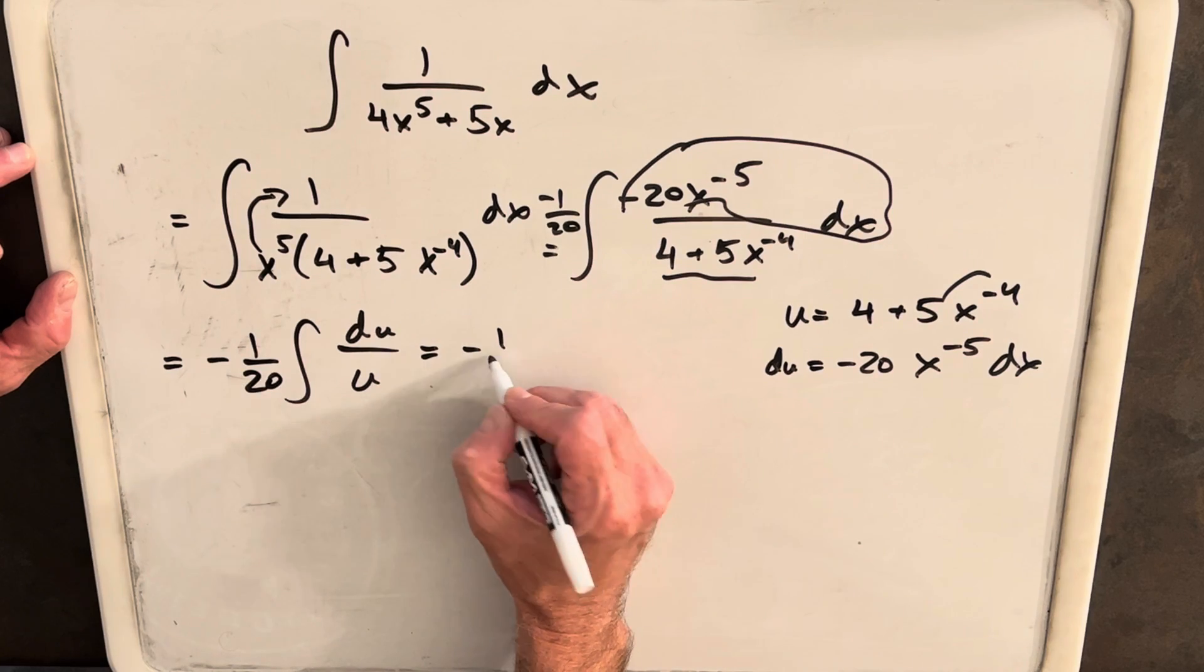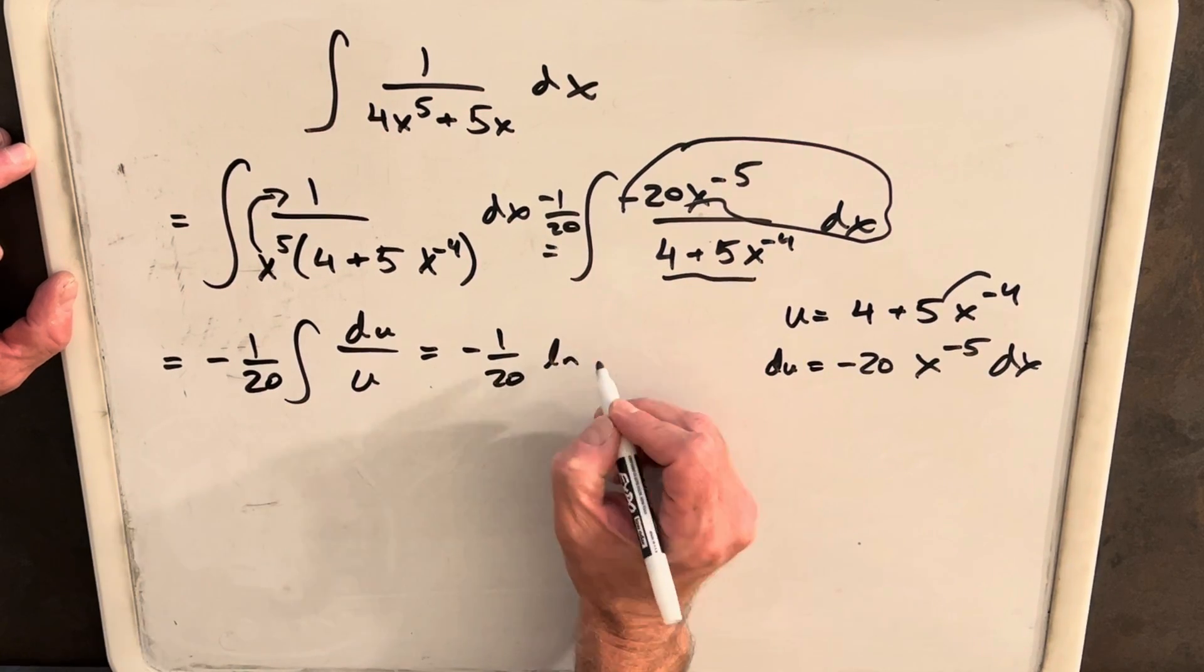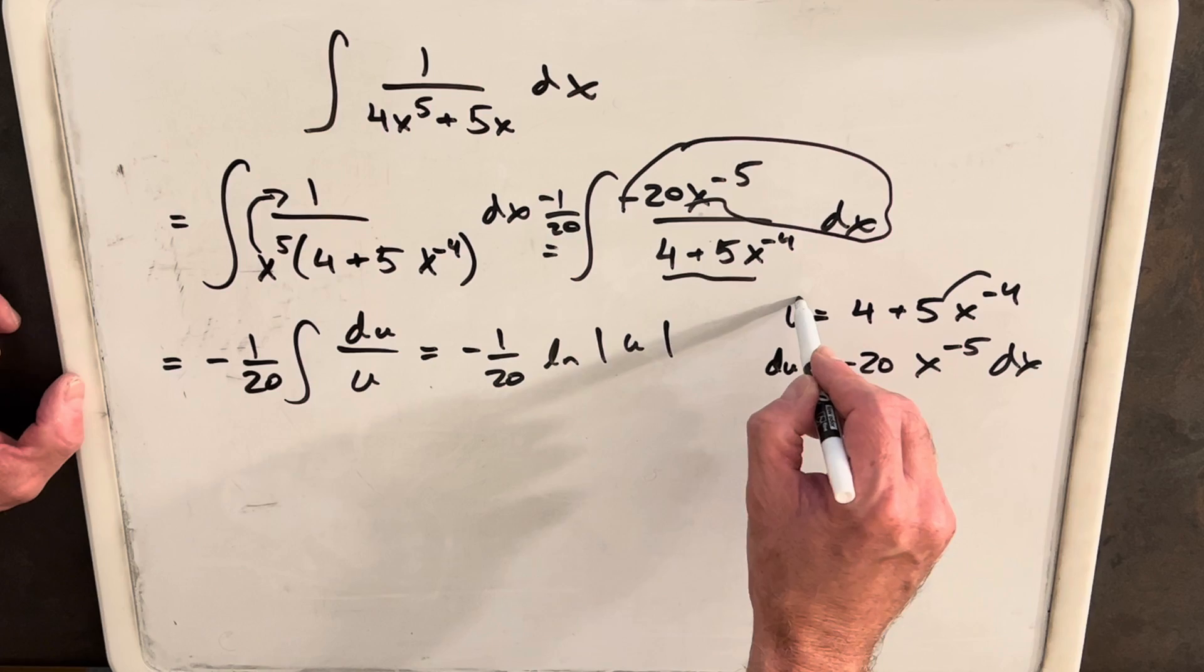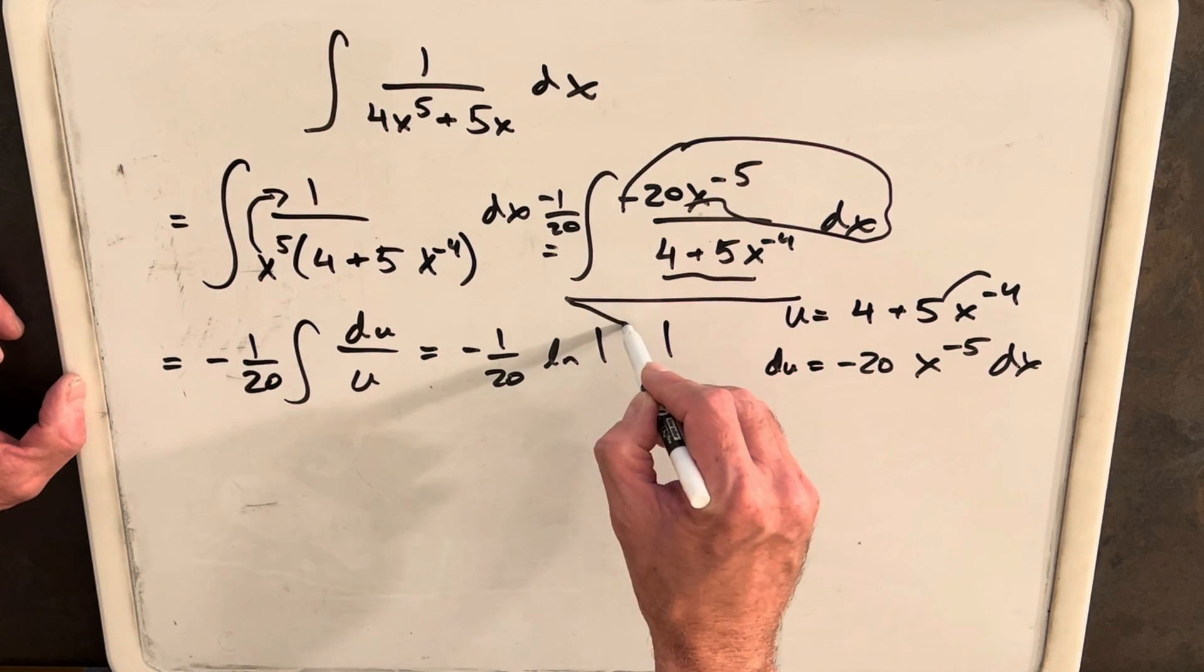Then integrating, we'll have minus 1 over 20 ln absolute value of u. Then we need our u and we need to bring it back here.